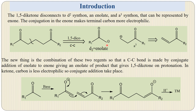This 1,5-diketone carbon-carbon disconnection gives us an enolate and an electrophile, i.e., acceptor synthone, which is an alpha-beta unsaturated carbonyl compound. The combination of these two reagents forms a carbon-carbon bond by conjugate addition of the enolate to the enone, giving us the 1,5-diketone on protonation. A ketone in the presence of base — base abstracts the alpha hydrogen and it becomes a carbanion or enolate, which attacks on the enone, and after protonation we obtain the target molecule, the 1,5-diketone.